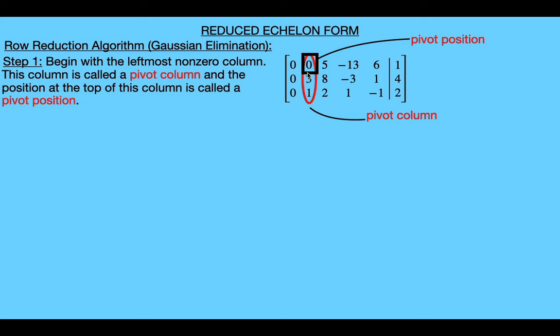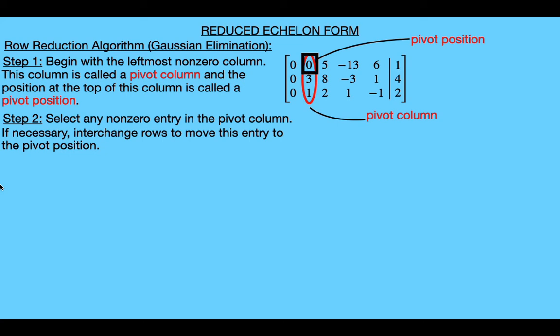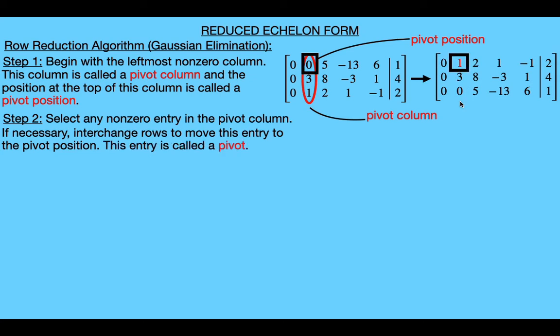The pivot position is a location in the matrix, so it doesn't depend on the value in that position. For step two, we need to select any non-zero entry in the pivot column. In our example we have a one and a three, and the algorithm says we can choose either. Then if necessary, we interchange two rows to move that entry into the pivot position — here we interchange the first and third rows to get the one into the pivot position. We call the entry placed in the pivot position the pivot.